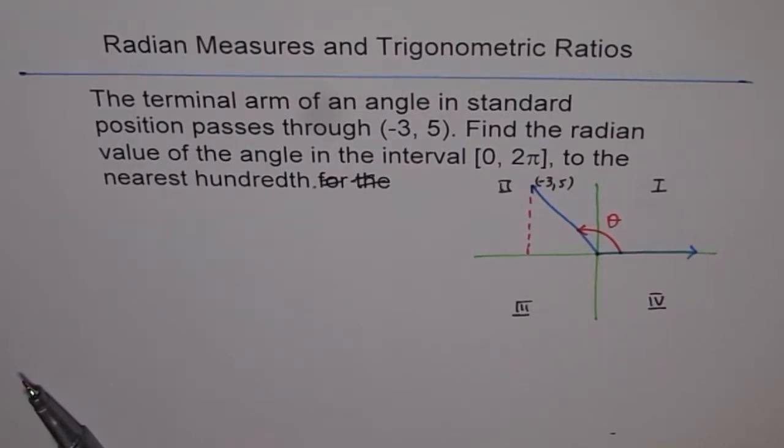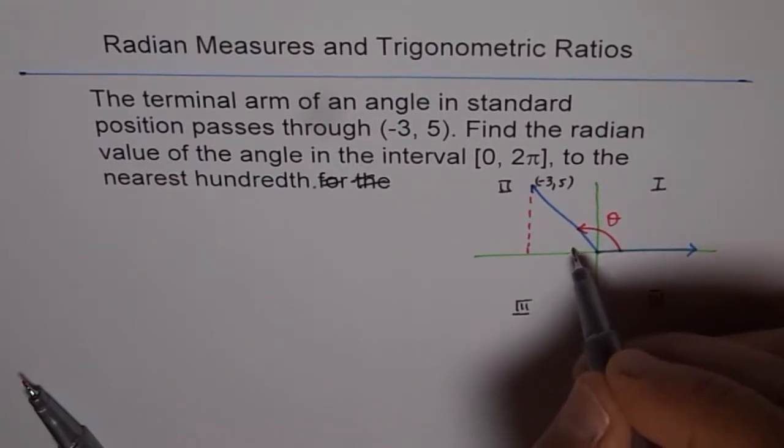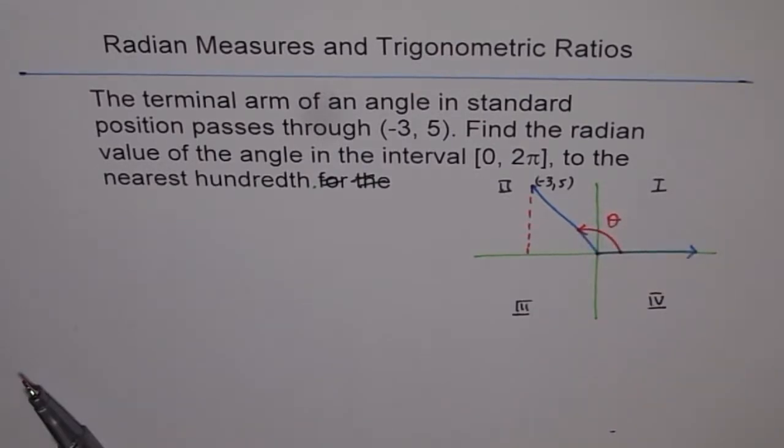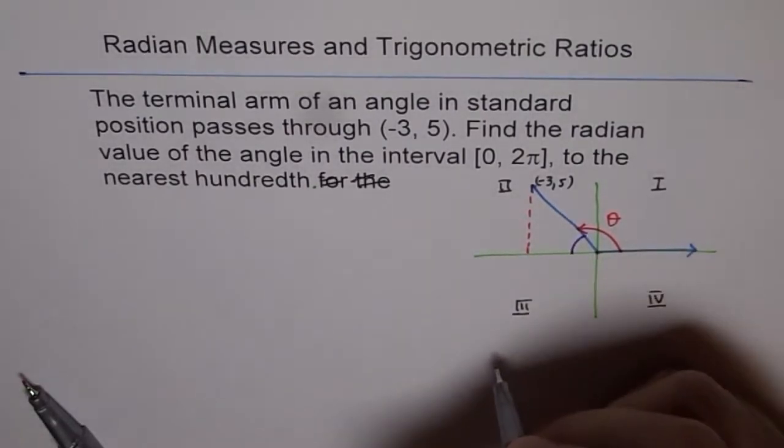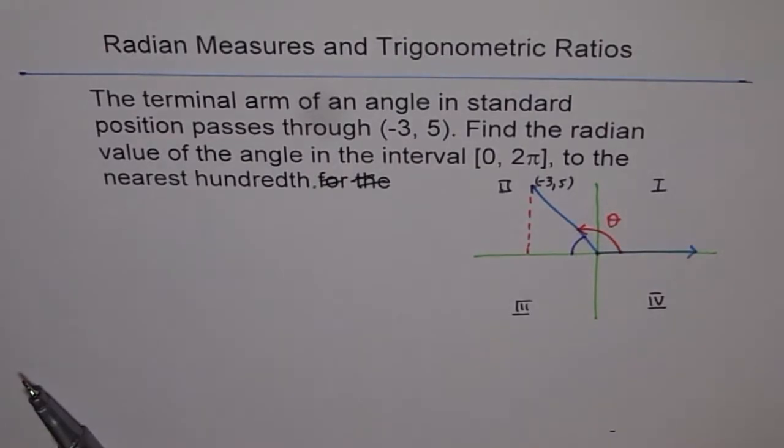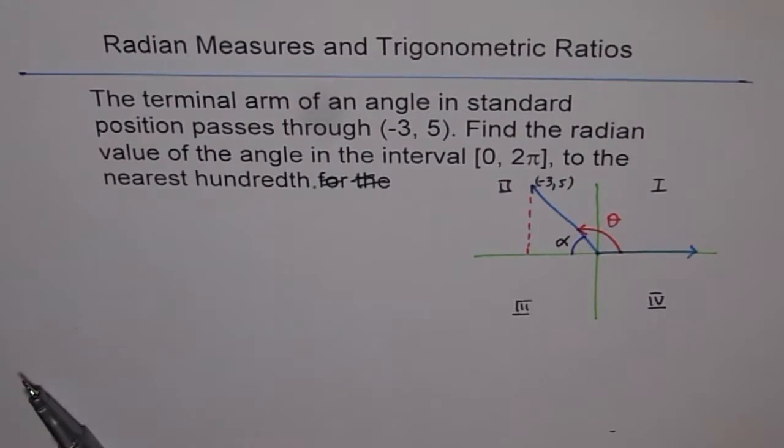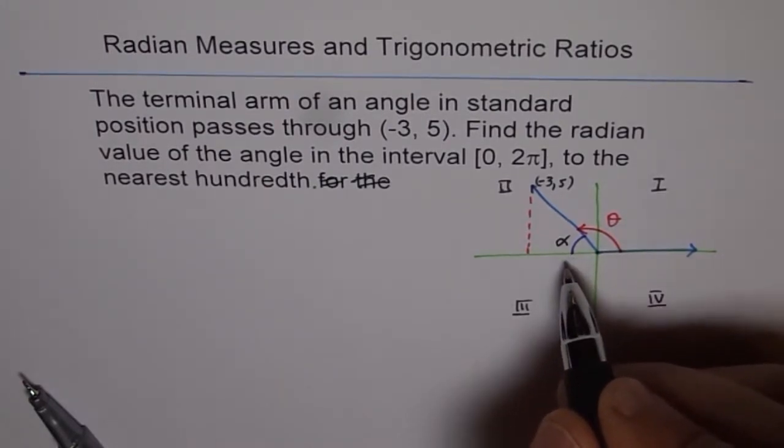To find this angle theta, we can find the related acute angle. The related acute angle is the angle which the terminal arm makes with the horizontal. Let this angle be alpha. The related acute angle is always between 0 and 90 degrees.